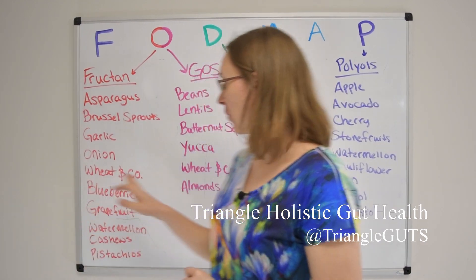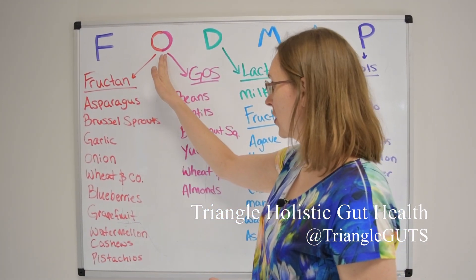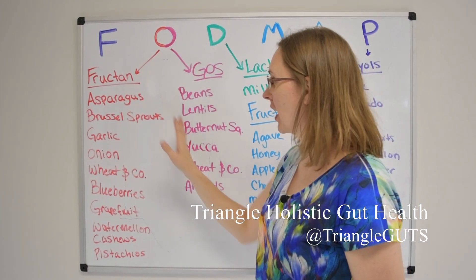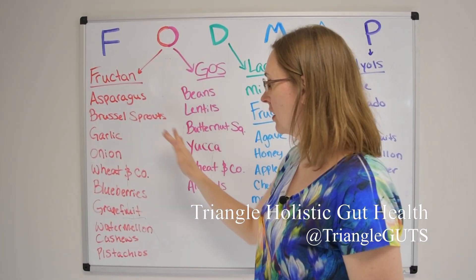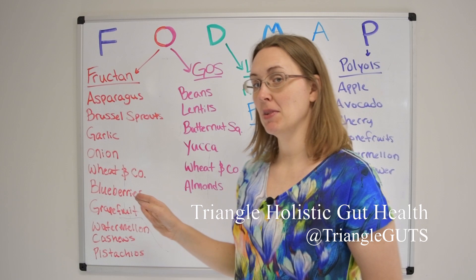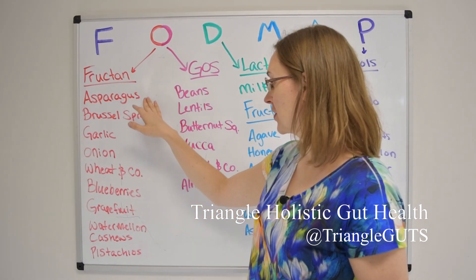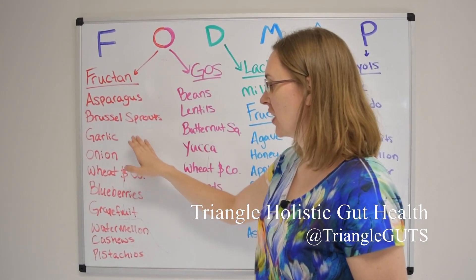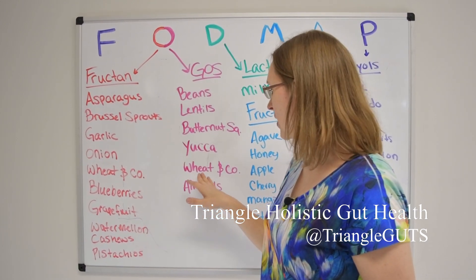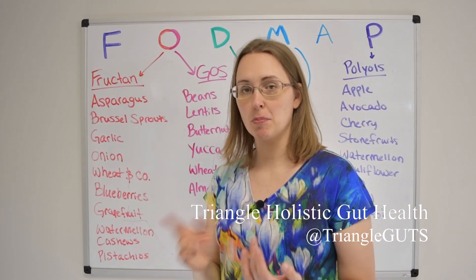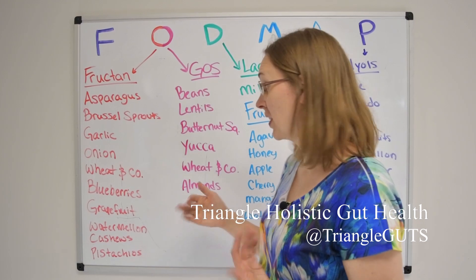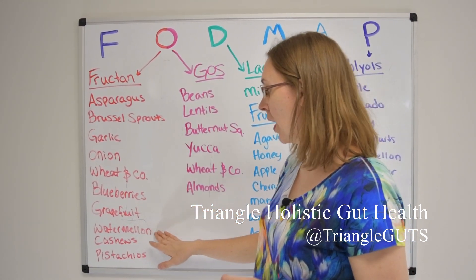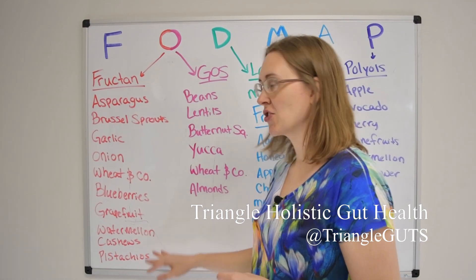First, let's start with the oligosaccharides, which can be divided into two categories: fructans and GOS. This includes a lot of the famous FODMAPs — things like asparagus, beans and lentils, Brussels sprouts, onion and garlic. I wrote wheat and company because that encompasses barley and rye also, as well as amaranth. Blueberries have a lot of fructan, as do grapefruit, watermelon, and cashews and pistachios.